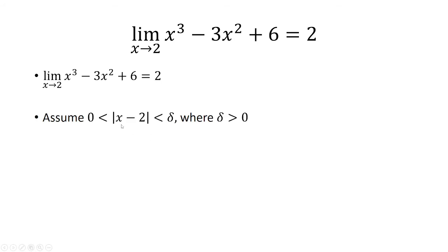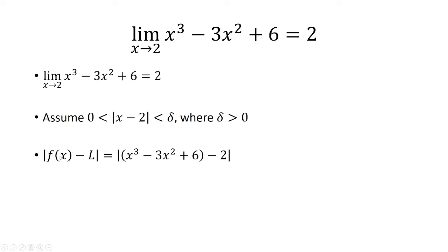First, let's assume that the absolute value of x minus 2 is greater than 0 but less than delta, where delta is greater than 0. Let's consider the absolute value of the function minus the limit. The function was x cubed minus 3x squared plus 6, and the limit was 2. Subtracting those, we get x cubed minus 3x squared plus 4.